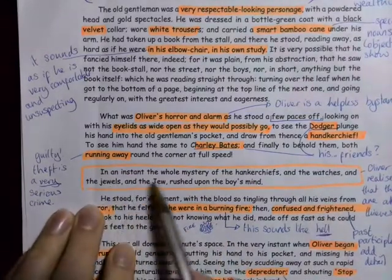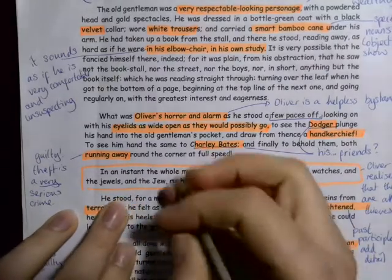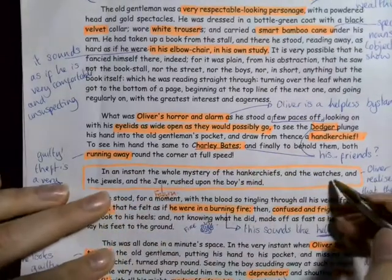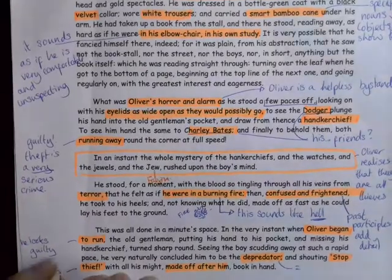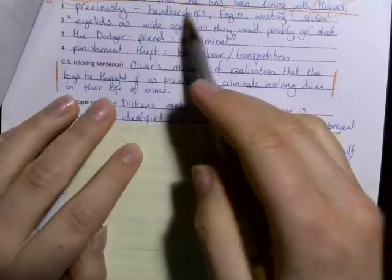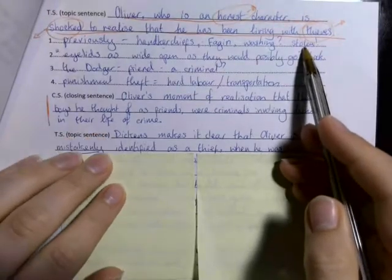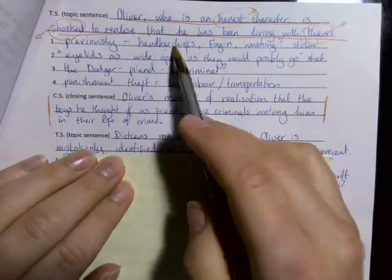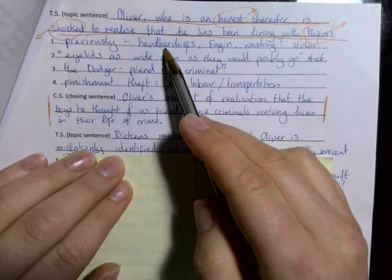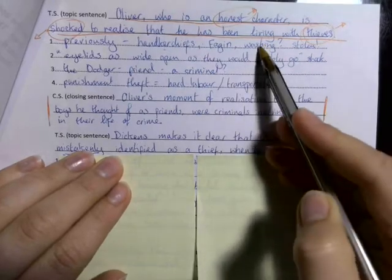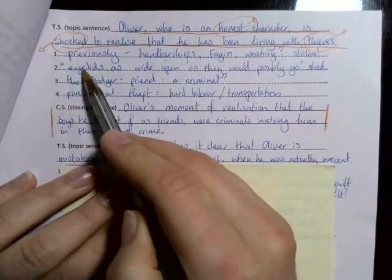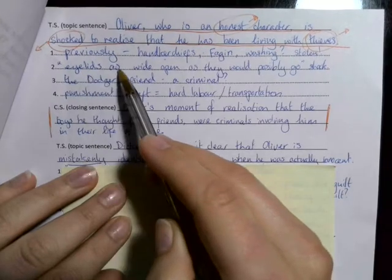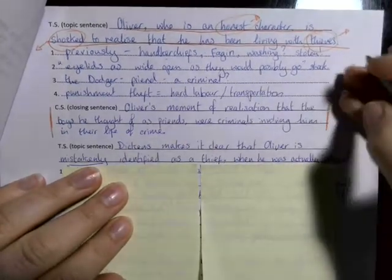So I noted that Oliver realizes the mystery of the handkerchiefs now. Because we haven't read all of the book, you've missed out a bit: the watches and the jewels. The Jew, Fagan, doesn't just have lots of beautiful silk handkerchiefs, he also has a secret box with gold watches and jewels, lovely shiny objects that he's far too poor to have in any honest way. I've said: previously handkerchiefs, Fagan washing, stolen. I also picked this little detail: Oliver's eyelids were as wide open as they would possibly go. What a great image of total shock and alarm from Oliver.